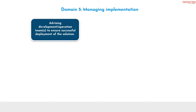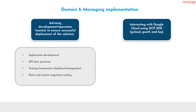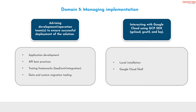Domain 5: managing implementation. Number 1, advising development or operation teams to ensure successful deployment of the solution. It contains: first, application development; second, API best practices; third, testing frameworks — load, unit, integration; fourth, data and system migration tooling. Number 2, interacting with Google Cloud using GCP SDK, gcloud, gsutil, and bq. It contains: first, local installation; second, Google Cloud Shell.